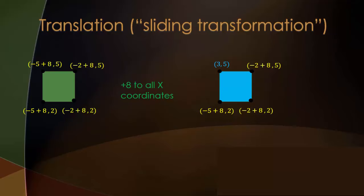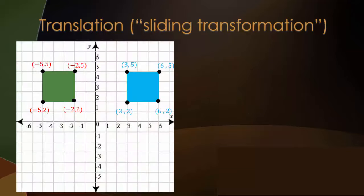The first vertex reduces down to (3, 5). And the rest reduces down to (6, 5), (3, 2), and (6, 2). Let's see if this matches up. We have successfully translated our figure over 8 units.